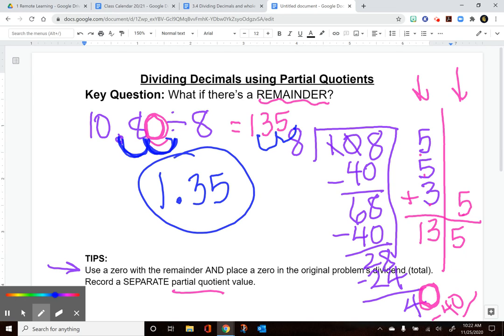I hope this helps divide with decimals if you're using the partial quotient strategy and there ends up being a remainder.